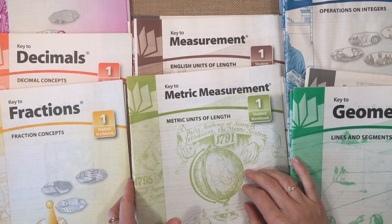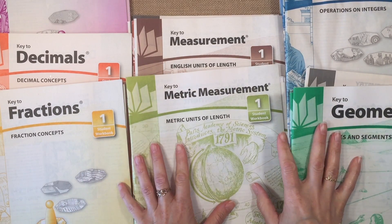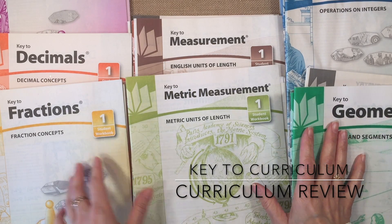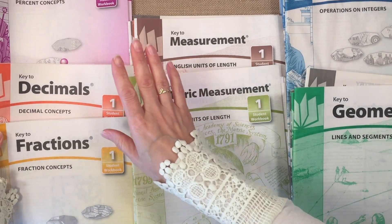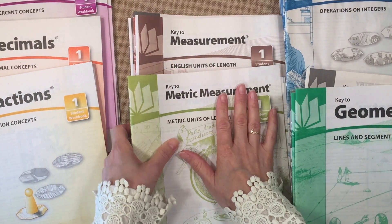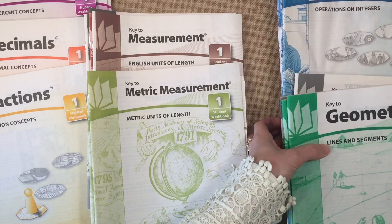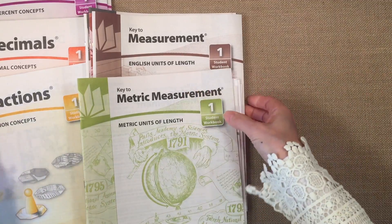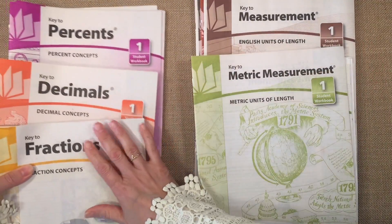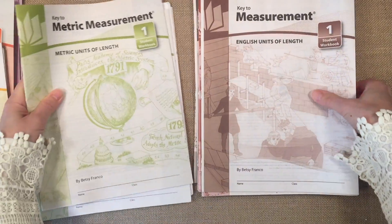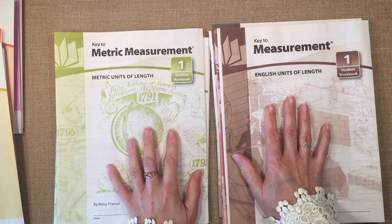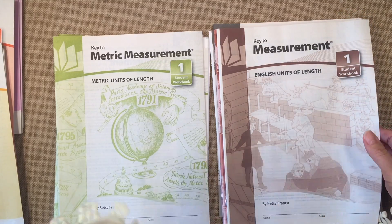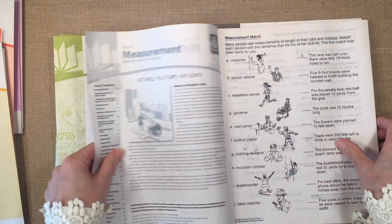Hi everybody, my name is Hannah and this is Pepper and Pine. Today I'm going to share with you my thoughts and impressions for the Key to Curriculum Math series. This is a series of math workbooks that go from percents, decimals, and fractions to metric measurement and measurement and up into geometry and algebra. The first thing I want to point out is that these two sets of workbooks are actually really similar because one does metric measurement and the other one does English units of measure.